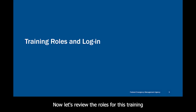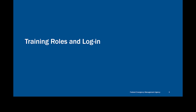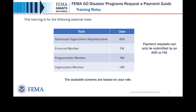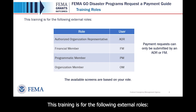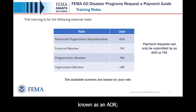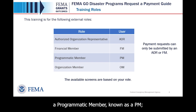Now let's review the roles for this training and how to log in as an external user. This training is for the following external roles: an Authorized Organization Representative, known as an AOR; a Financial Member, known as an FM; a Programmatic Member, known as a PM; and an Organization Member, known as an OM.